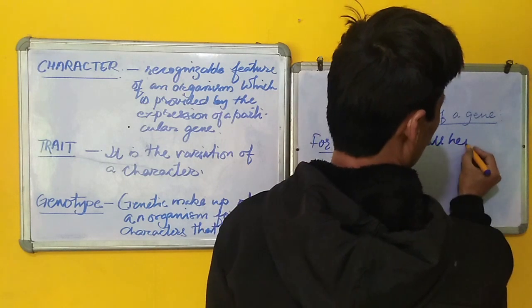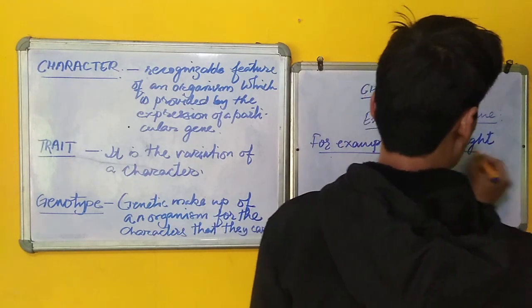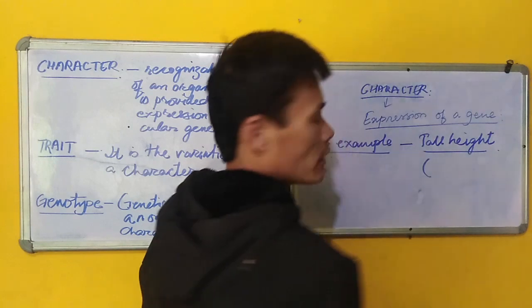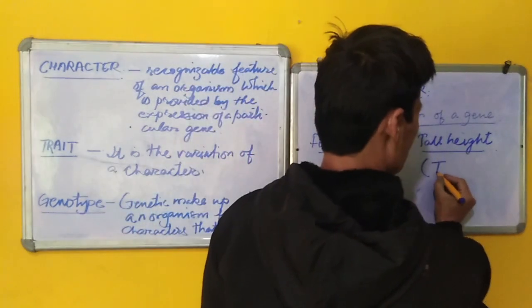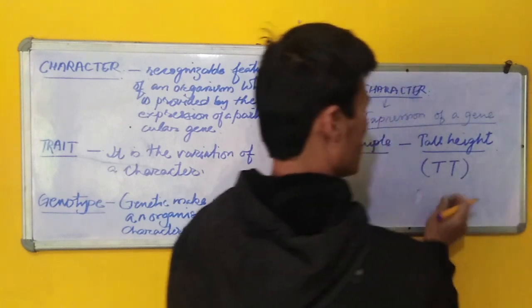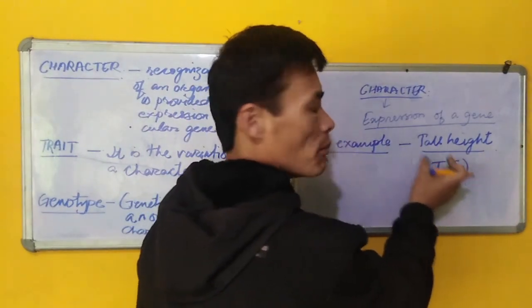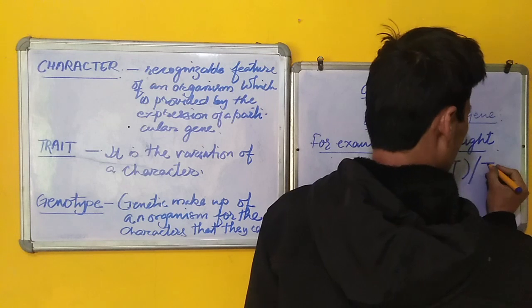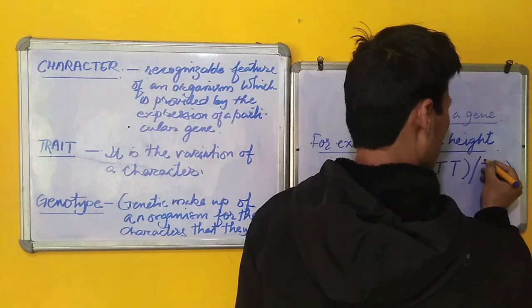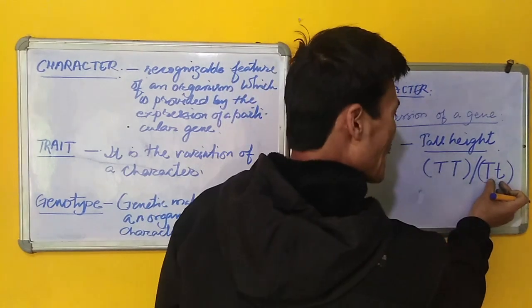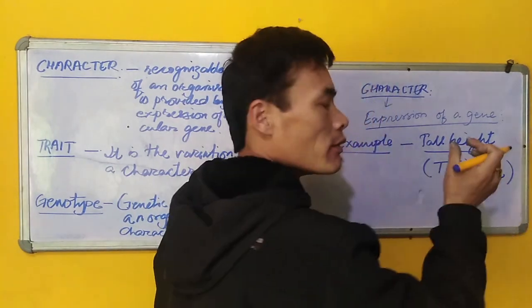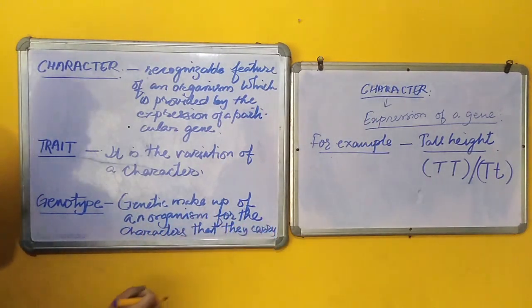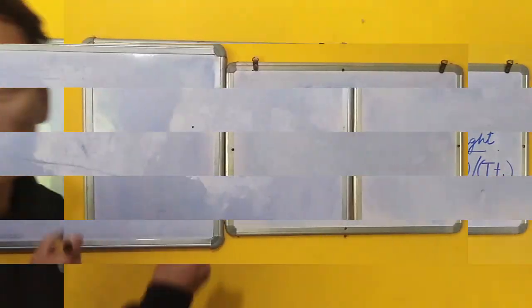For example, a tall height, which is a character, is represented by English alphabet, capital T, capital T, which represents a gene combination, or it can also be represented as capital T and small t. And here also, the capital T and small t represents nothing but the genotype for a particular character of an organism.